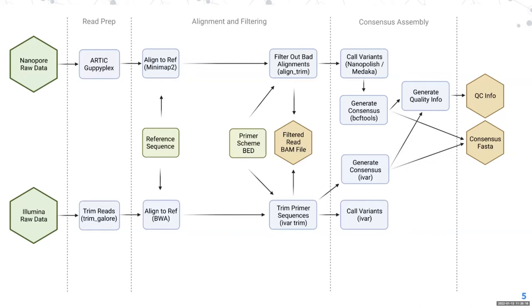After read prep, you move to alignment and alignment filtering, starting with aligning to the reference. On the Nanopore side we use minimap2, written by Heng Li. On the Illumina side you use BWA, also by Heng Li. In both cases, you are figuring out where each read fits on the reference genome. You can have anywhere up to 20-odd million reads for Illumina, although that is unreasonably large.